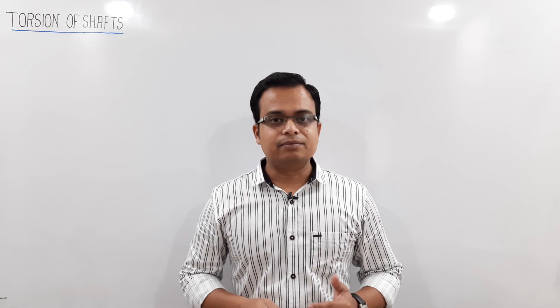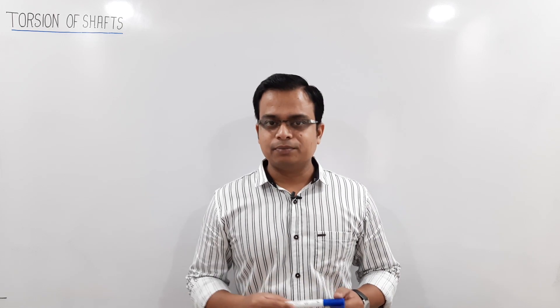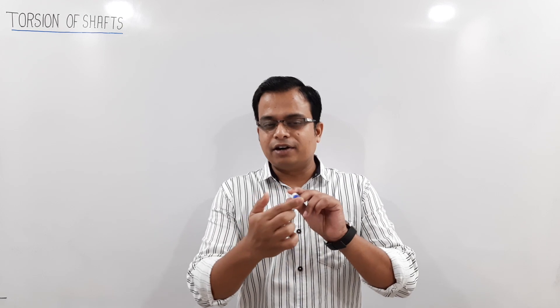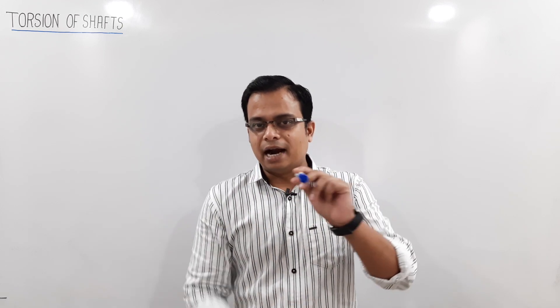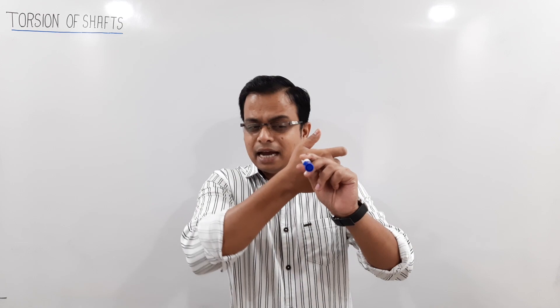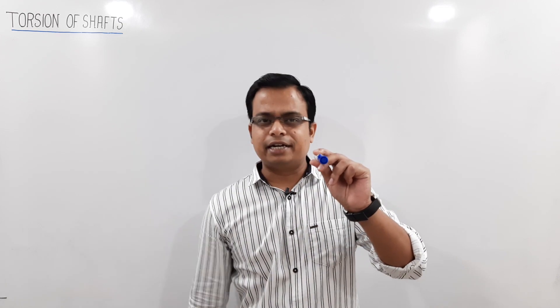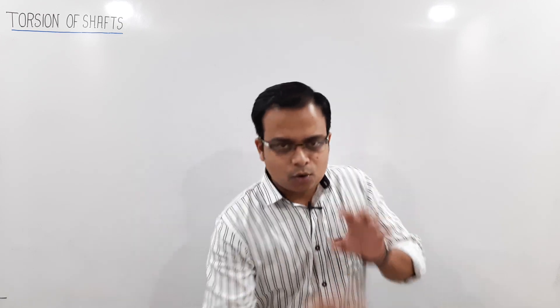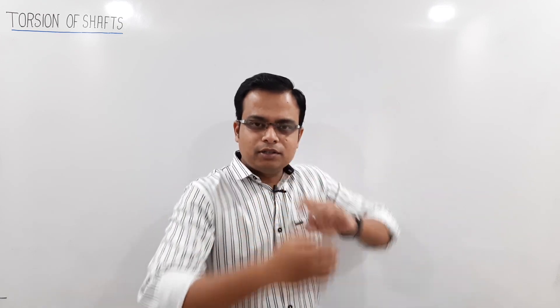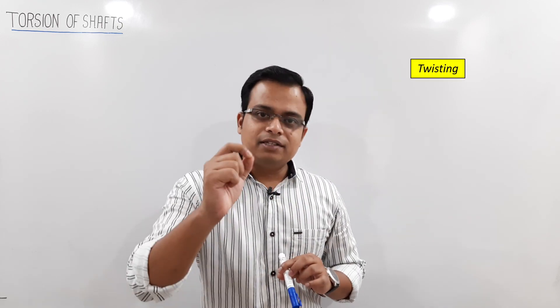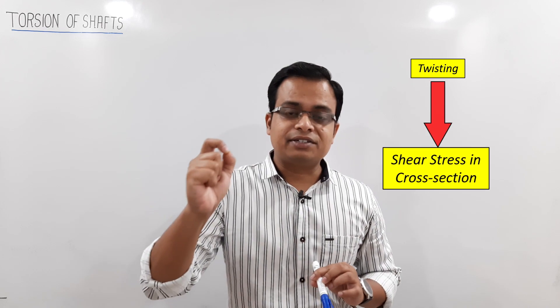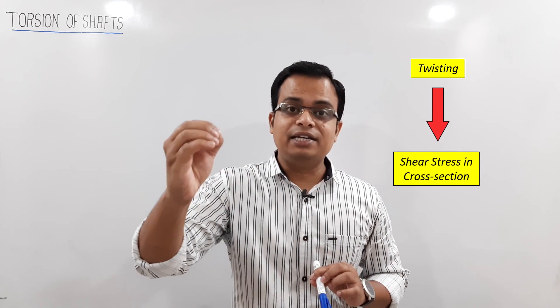Let's start with the demonstration. Assume this pen to be a shaft — it's got a front and a back. Let's apply some torque at the front and an equal amount of torque in the anti-clockwise direction at the back. This is the perfect case of twisting, and whenever there is twisting in a shaft, there are shear stresses induced at any cross-section.